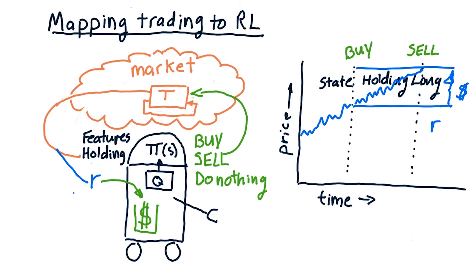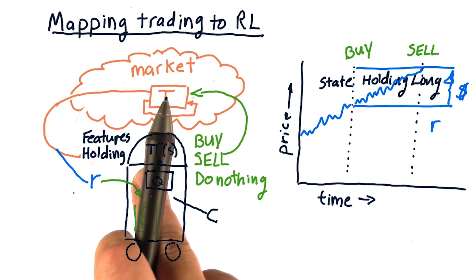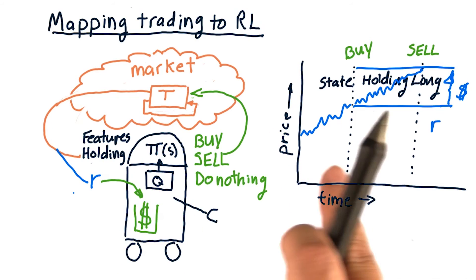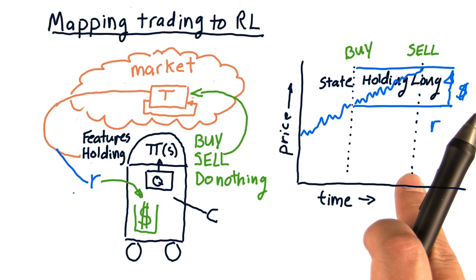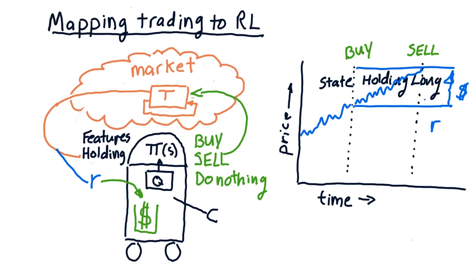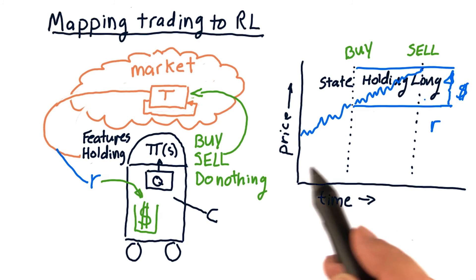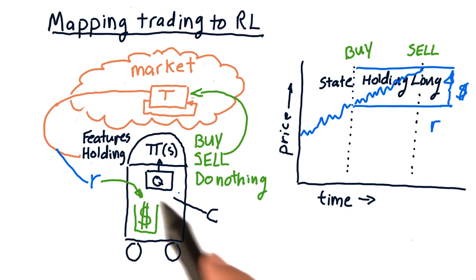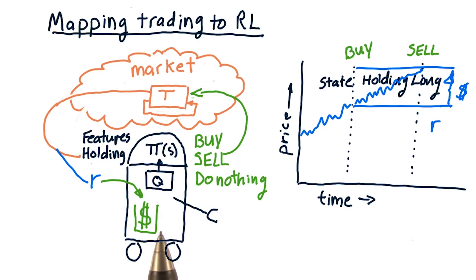Just to recap: the policy that we learn tells us what to do each time we evaluate a state. We haven't talked yet about how we learn the policy, but we're going to learn it by looking at how we accrue money or don't based on the actions we take in the environment.